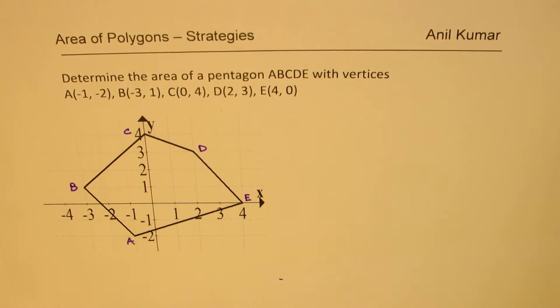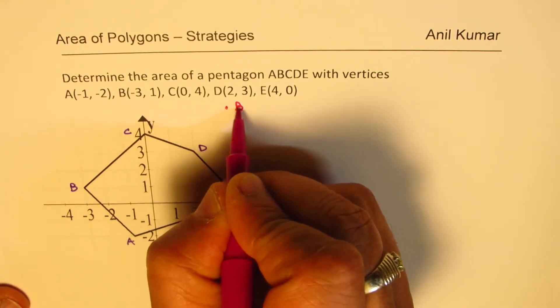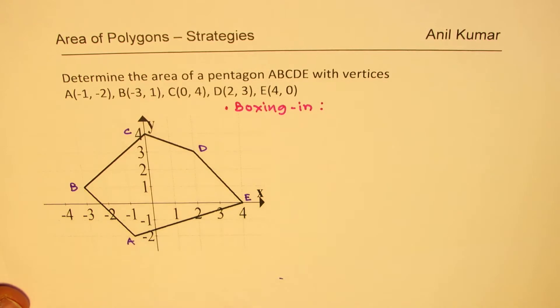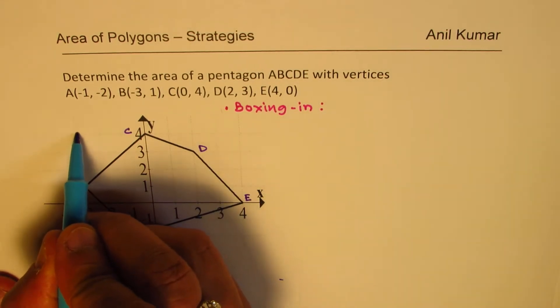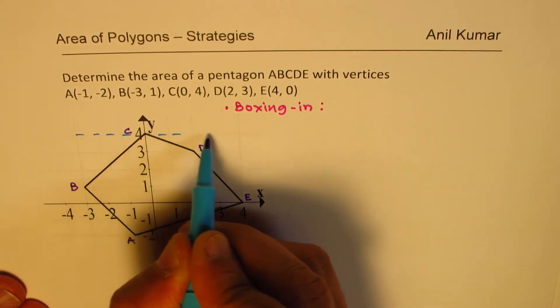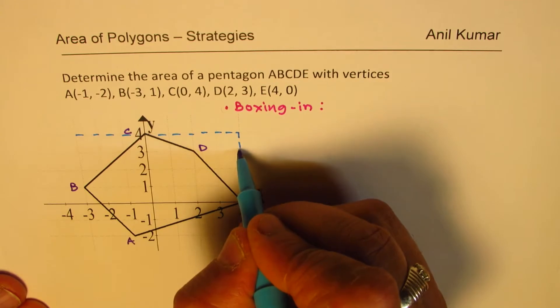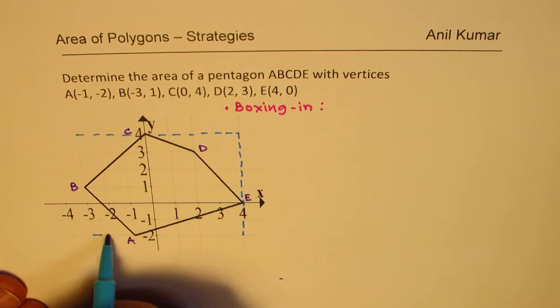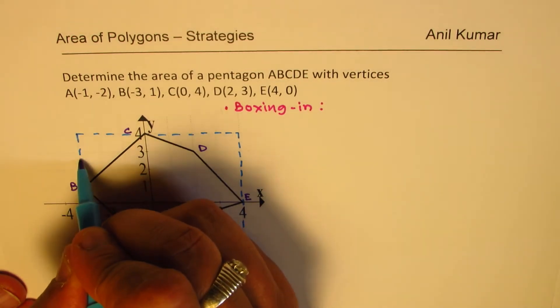We'll actually discuss two different techniques to find the area of this polygon. One of them is called boxing, boxing in technique. So basically, what we do here is we make a box around the pentagon like this. We take care that the pentagon itself is inscribed inside the rectangle.